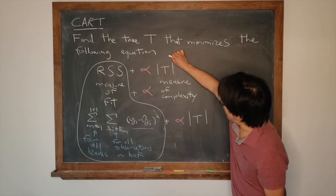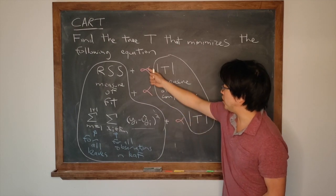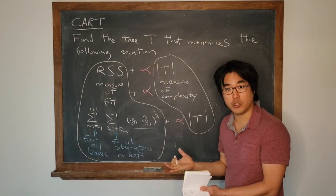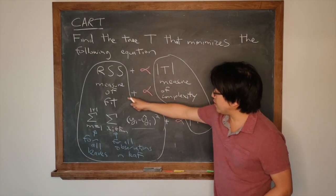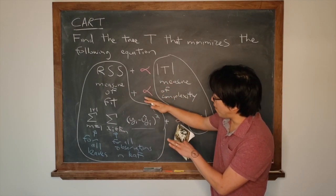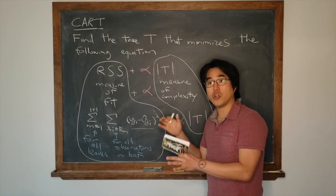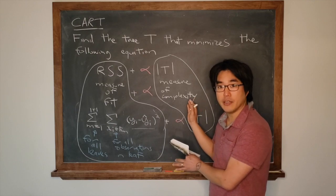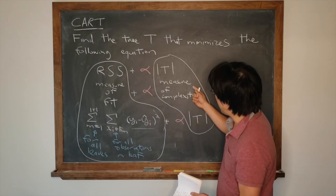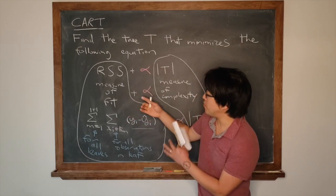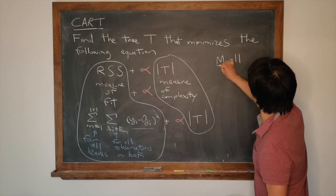Over here we have the measure of complexity of the tree. The lambda sets the balance between the two. And this is the key idea folks. As the tree better fits the data, it necessarily has to be more complex. Also vice versa. If you have a very simple tree, just a stump, it's not going to fit the data very well.